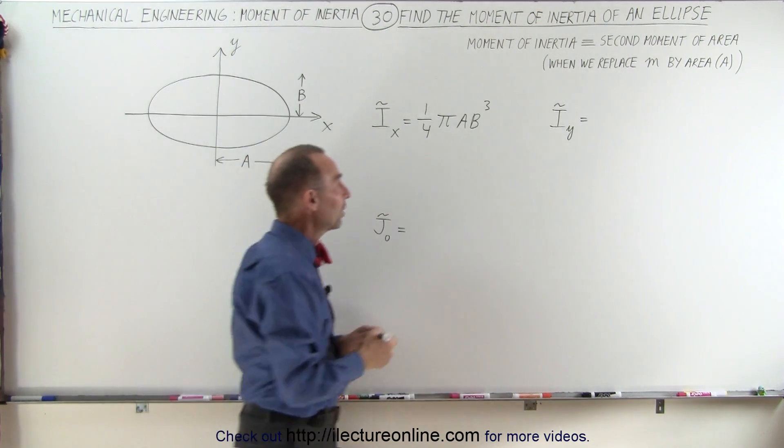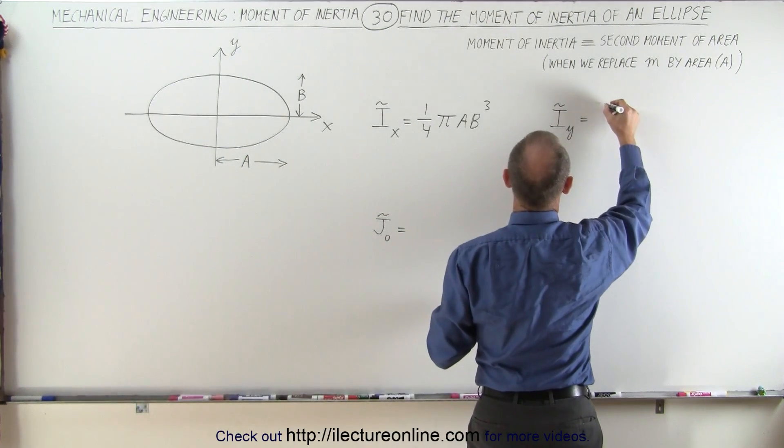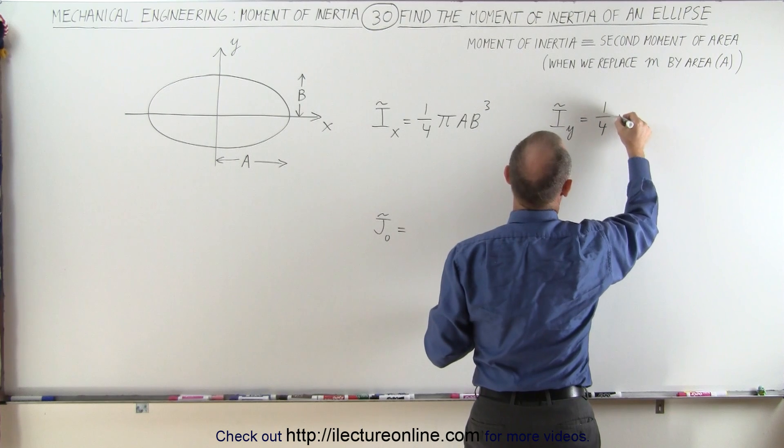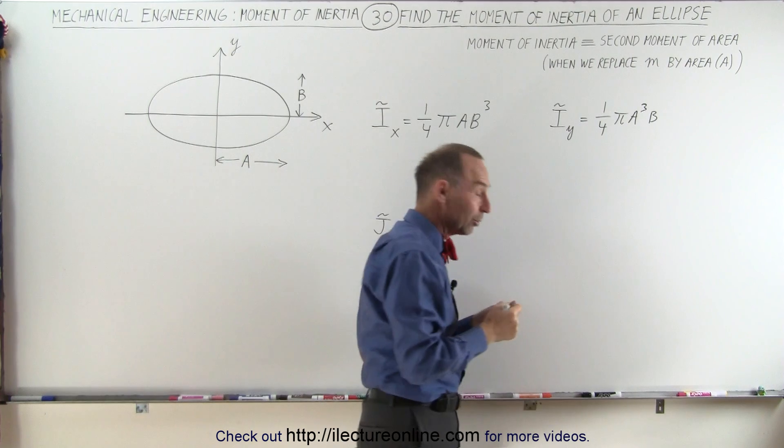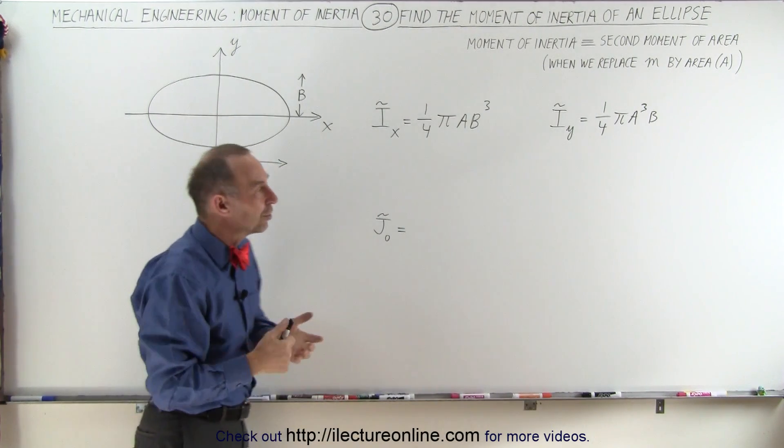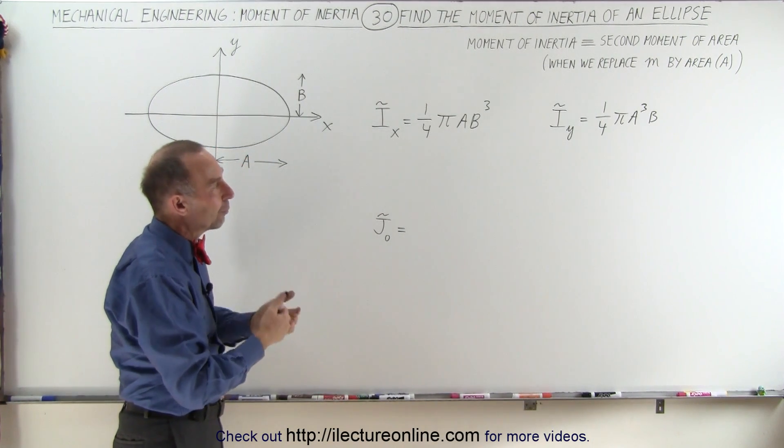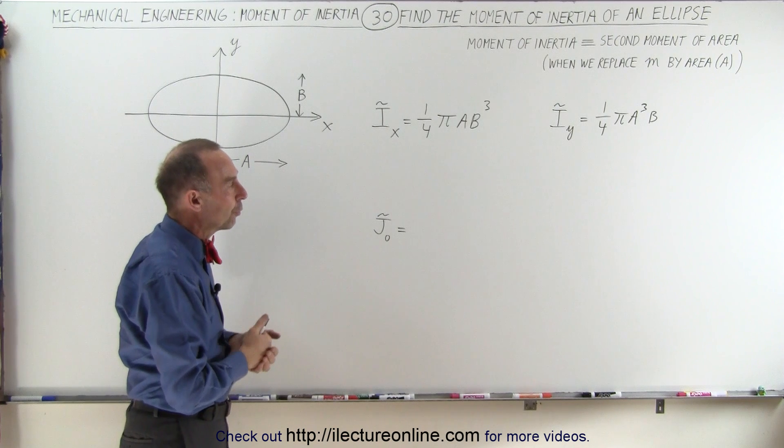In the y-direction, the equation then becomes as follows. It is equal to one-quarter pi a cubed b. And again, when b becomes equal to a, you can see that gives you the equation of a circle, and we have one-quarter pi r to the fourth.